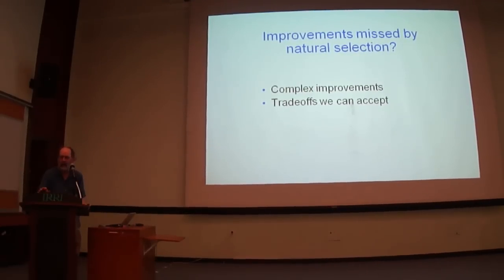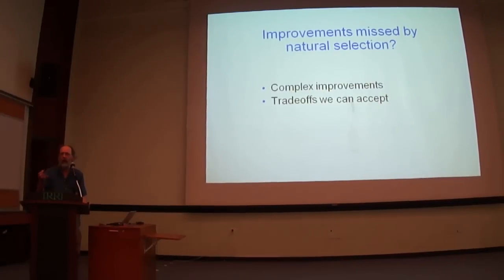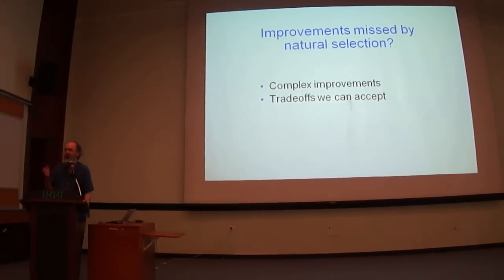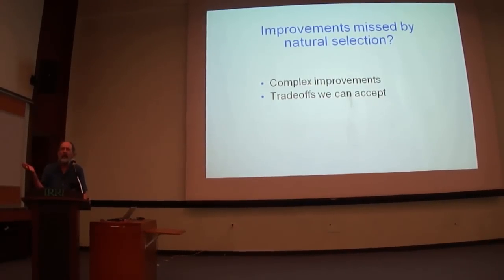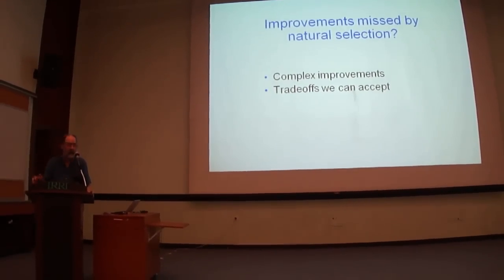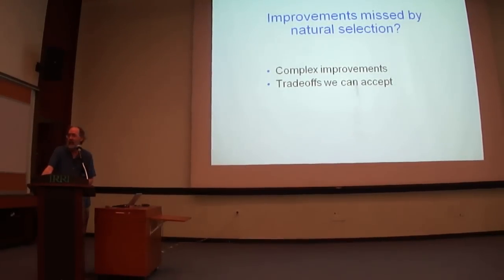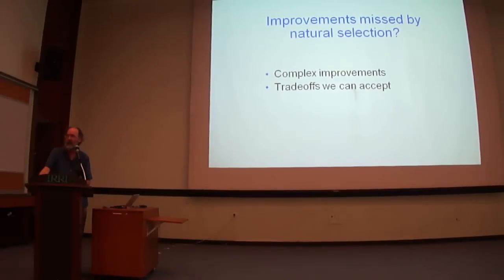We can't say whether they would be beneficial or not — we can try to reason it out, but we can't say, 'Oh, if this were beneficial, it would already exist.' If it's sufficiently complex, it might never have arisen in the first place. And then the other large category is the case of trade-offs that have been rejected by past natural selection, but for our purposes are perfectly acceptable.